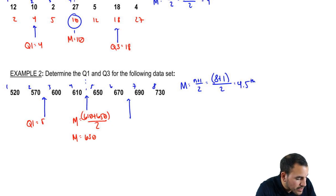So (570 + 600)/2, and we make sure we put that in parentheses. So Q1 ends up being 585.